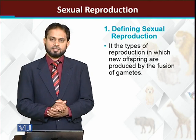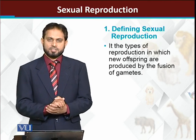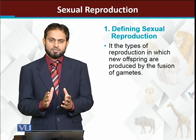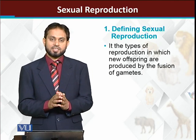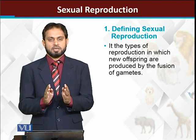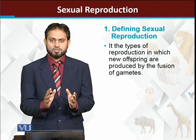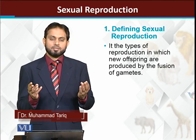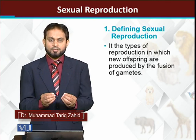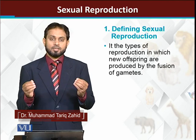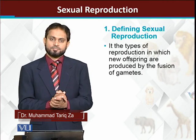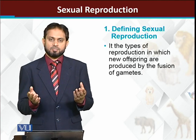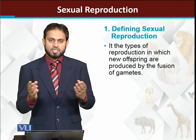So what is the definition of sexual reproduction? It is the method of reproduction in which there is a fusion of gametes. In simple words, we can define it as the fusion of two gametes — one fertilizes the other.